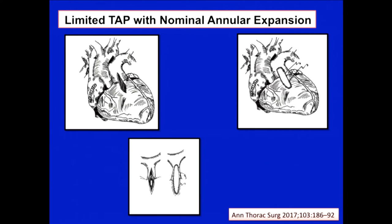There is also a theory of doing a limited transannular patch, with the hope that it will prevent significant pulmonary regurgitation. This was a study from the Rochester group, on the limited transannular patch technique using a Dacron patch — because autologous pericardium or glutaraldehyde-treated pericardium can cause aneurysmal dilatation and worsen pulmonary regurgitation in the long term. A stiffer material such as Dacron might be a suitable alternative.